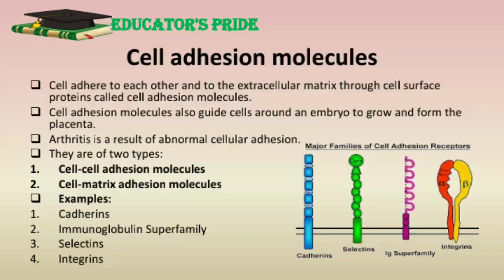Next are cell adhesion molecules. Cells adhere to each other and to the extracellular matrix through cell surface proteins called cell adhesion molecules. They include transmembrane proteins that fall into two categories: first, cell-to-cell adhesion molecules, and second, cell-matrix adhesion molecules. Some examples of cell adhesion molecules are cadherins, immunoglobulin superfamily, selectins, connexins, and integrins.